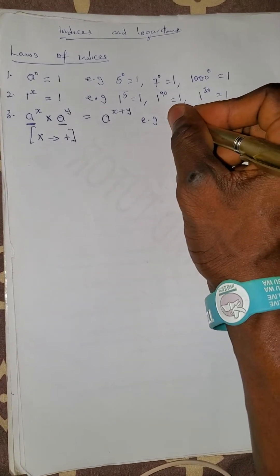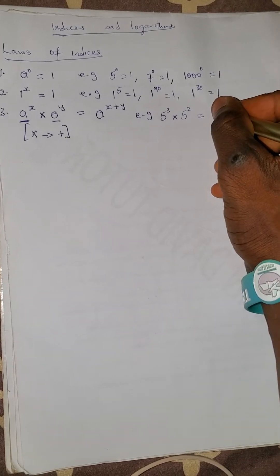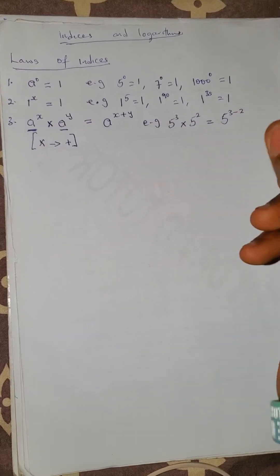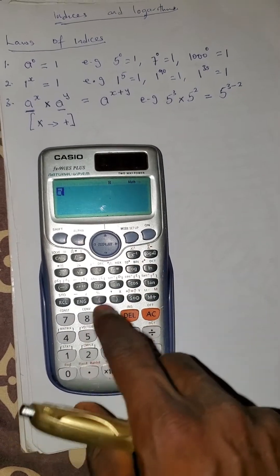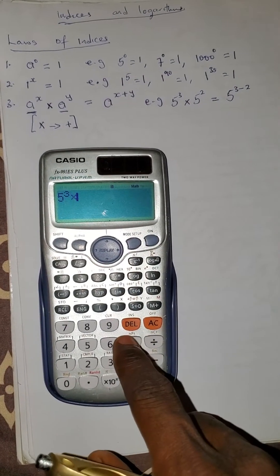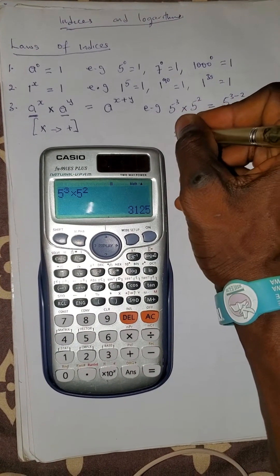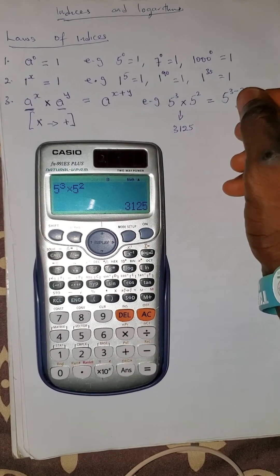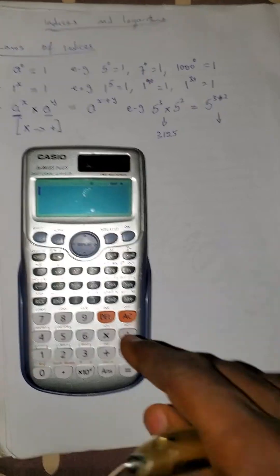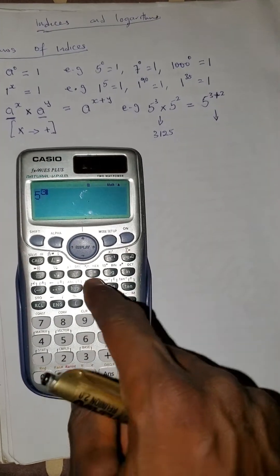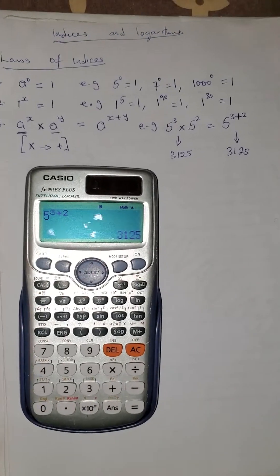For example, if you have 5 raised to the power 3 multiplied by 5 raised to the power 2, this equals 5 raised to the power 3 plus 2. If you press on your calculator 5 raised to the power 3 then multiply by 5 raised to the power 2, the answer is 3,125. And 5 raised to the power 3 plus 2 is also 3,125. The left side equals the right side.